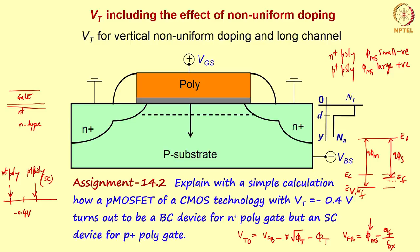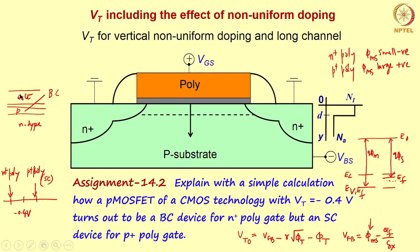For N+ poly, you need to shift the threshold to a more positive value to reach -0.4 V, requiring negative charge in the N-type substrate. This is achieved by introducing boron, creating a P-type region — a P-N junction — forming the so-called buried channel. Conduction occurs through this P-type region; ionized acceptors provide negative charge, requiring more positive gate voltage to reach threshold.